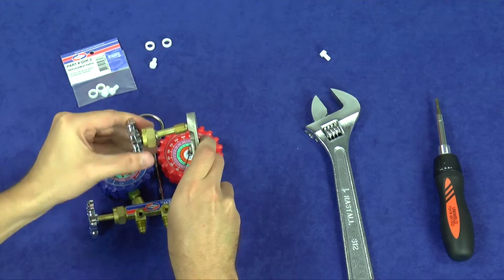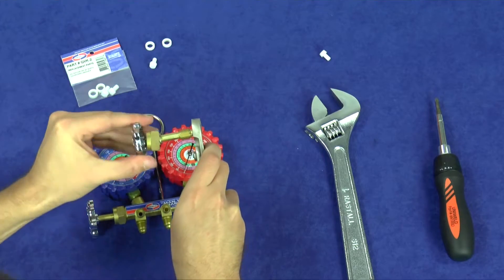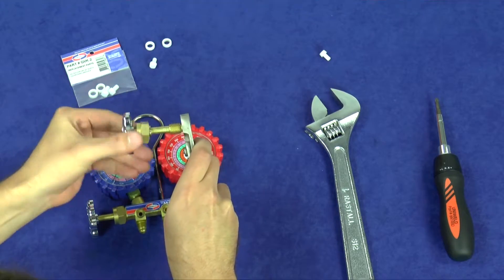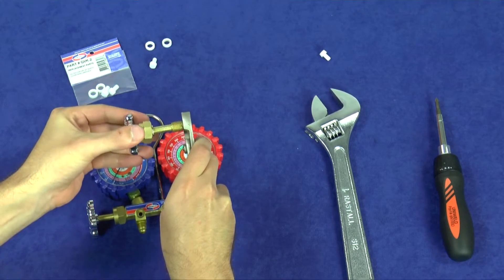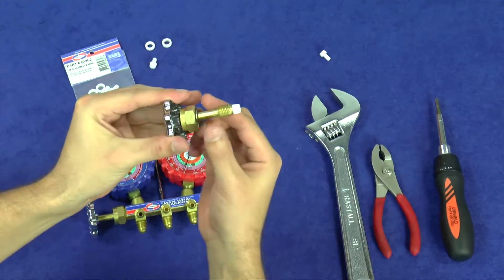When the Teflon is fully screwed in, it will not bottom out and stop rotating. Stop screwing in the Teflon seat once it is flush with the brass valve stem. If you continue to screw it in, the brass threads can strip the Teflon.